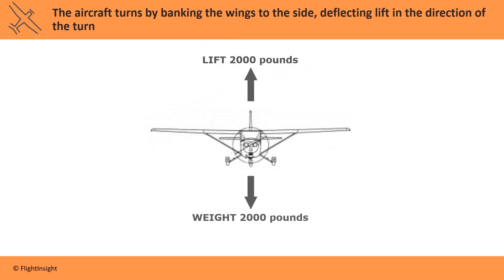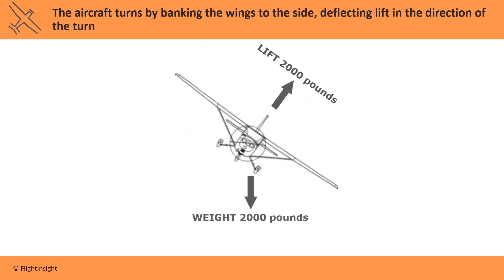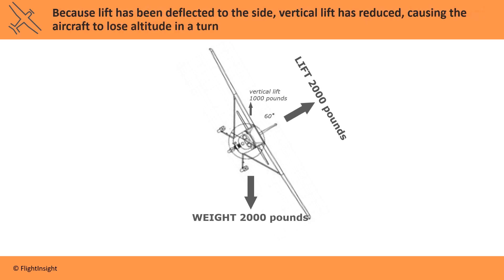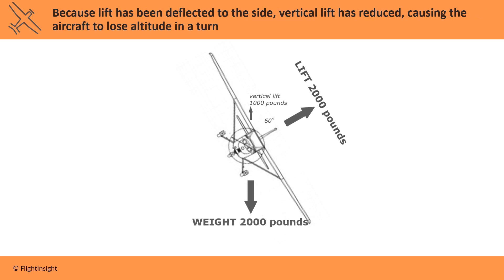The aircraft turns by banking the wings to the side, deflecting lift horizontally. The horizontal component of lift turns the aircraft in the direction of the bank. Because lift has been deflected to the side, vertical lift is reduced. Although the aircraft is still producing, say, 2,000 pounds of lift at a 60-degree bank angle, only 1,000 pounds of that lift is vertical to counteract weight, and the aircraft will descend.